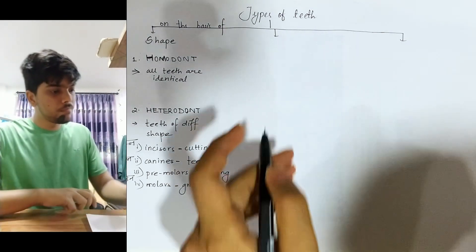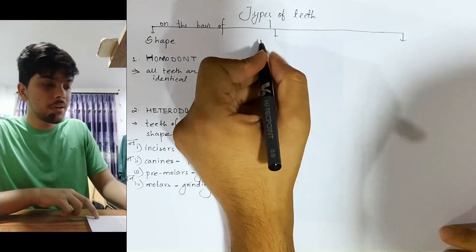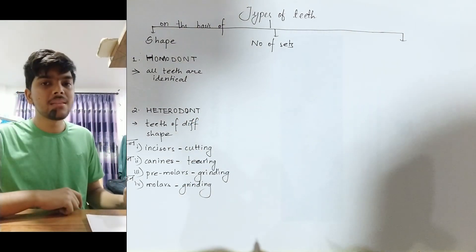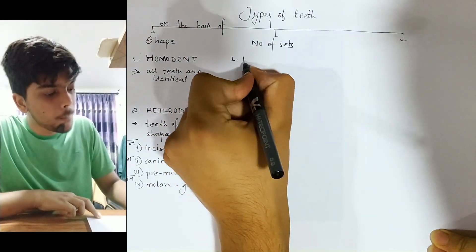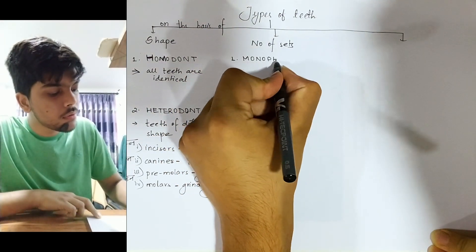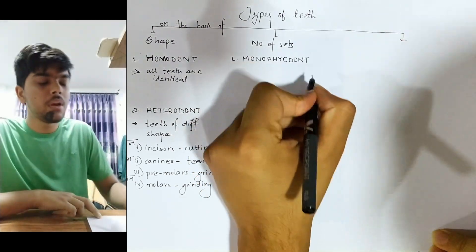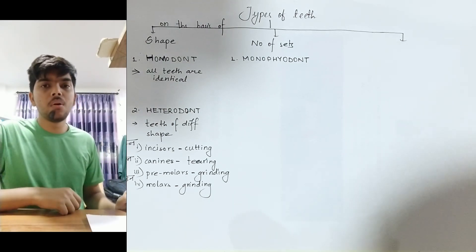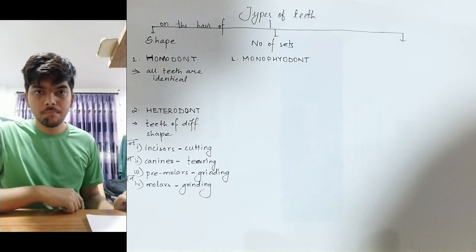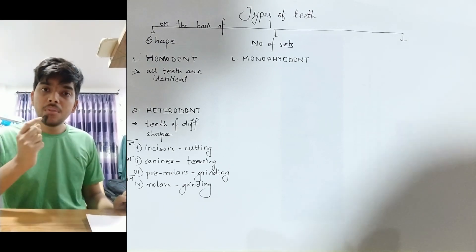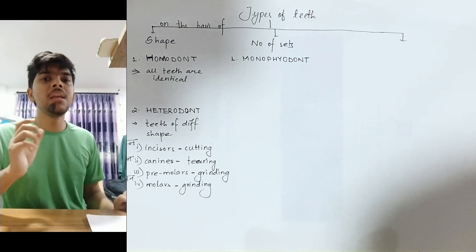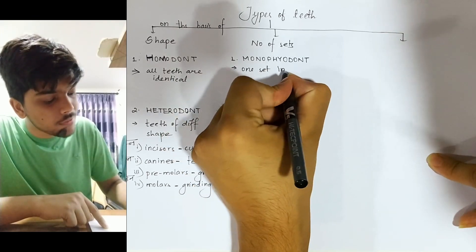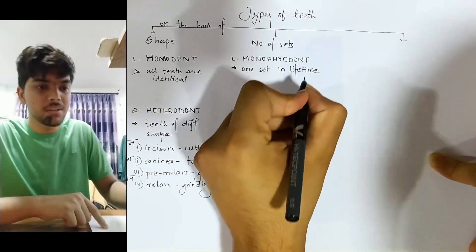On the basis of number of sets: number one, Monophyodont. Monophyodont means one set of teeth in a lifetime.